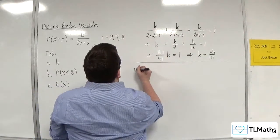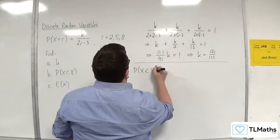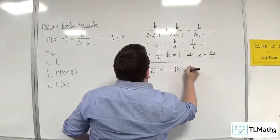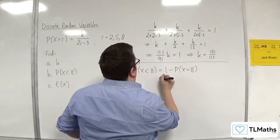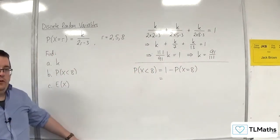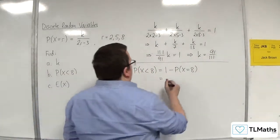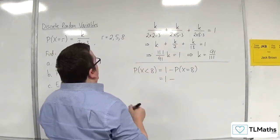Or you could work out the probability of x being less than 8 by subtracting the probability of x being equal to 8 away from 1. There are a couple of different ways you could do it.